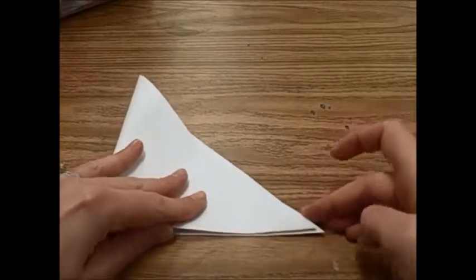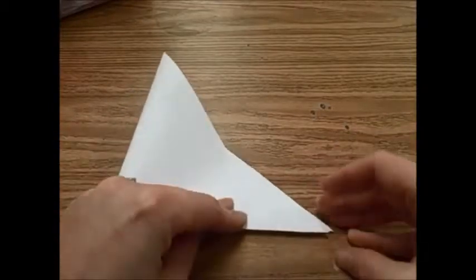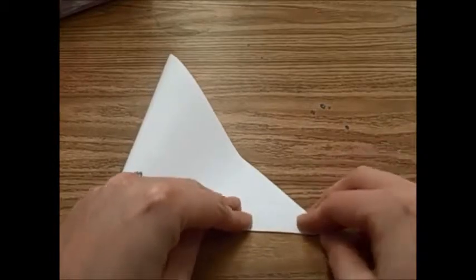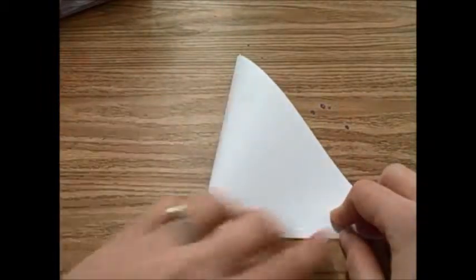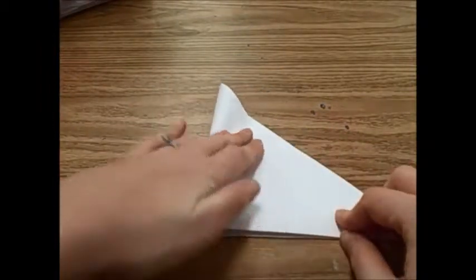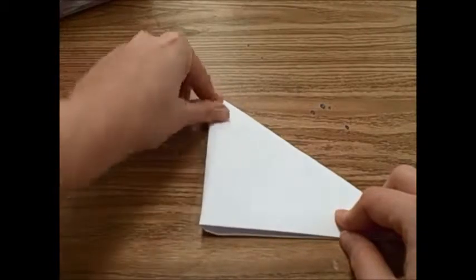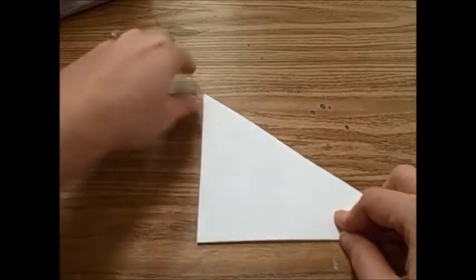And then I'm going to hold this down and crease it like I did the first time, pushing towards where the fold is going to be so that my crease, I don't mess up my paper folding. Okay, now I have a smaller triangle.